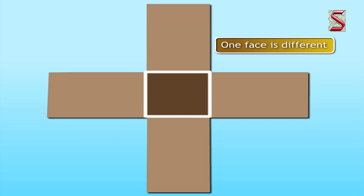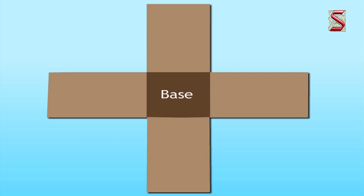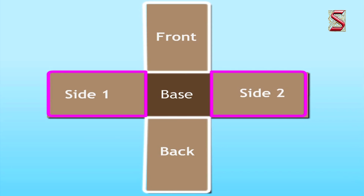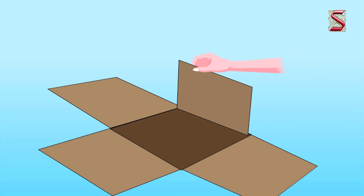Two opposite and equal faces are marked as front and back, and the remaining two opposite and equal faces are marked as side one and side two. He now folds the cardboard and gets the pen holder back, which he pastes with tape.